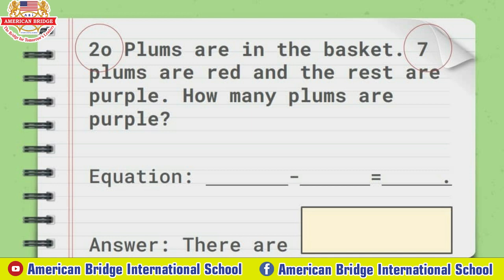I hope everyone understands right now. And now we will start to do the equation. So here is our equation. The first number is what, everyone? 20 plants in the basket — so all are 20. So we put the number 20 minus, or subtracted by, seven red plants. You understand? And N equals how many, everyone? Yes, it is 13.